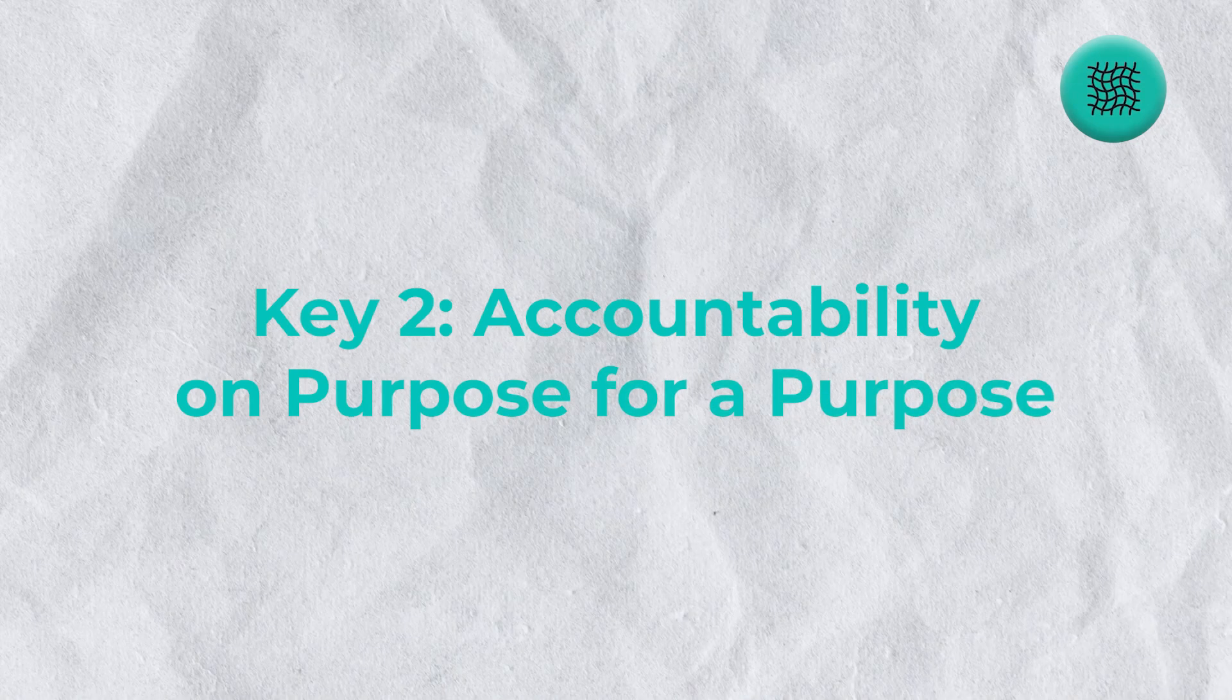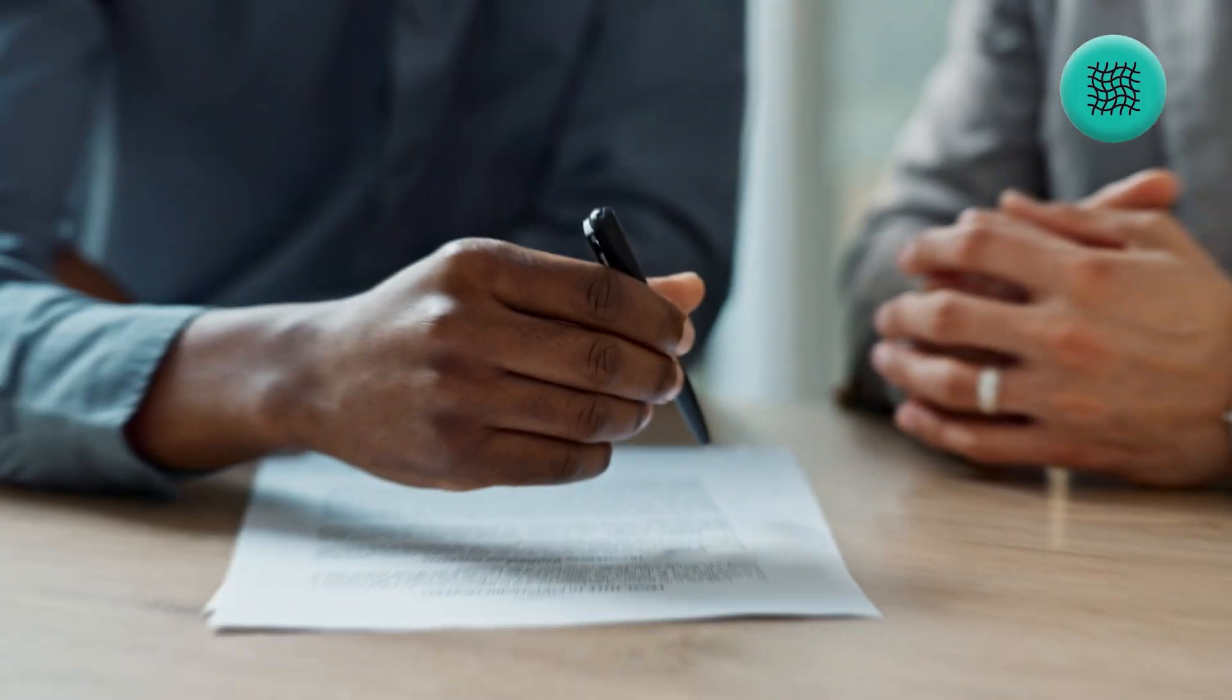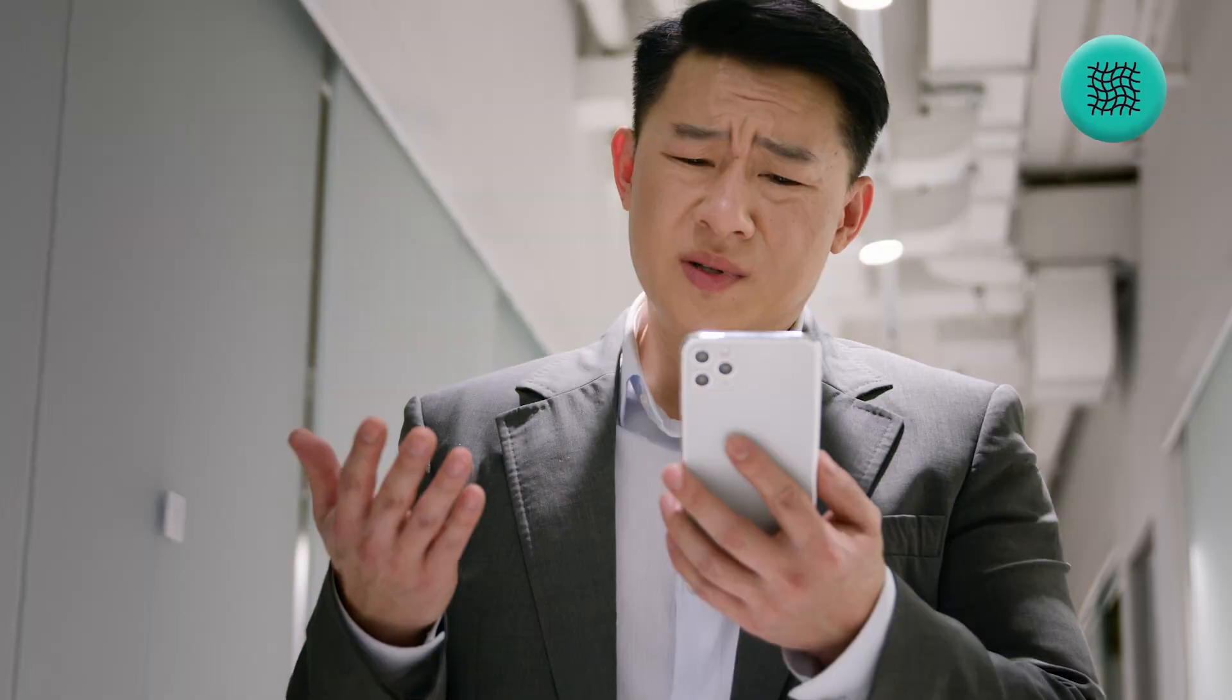That's because the measures that matter relate to the second key, which is relating your measurements to purpose. Accountability is built upon achieving the purpose that you have for your business or for your life. If you want to be accountable for something, you need to be accountable on purpose for a purpose. Accountability without purpose is really just legalism. It's creating rules for yourself that will create hassle and pain that don't really have a purpose.